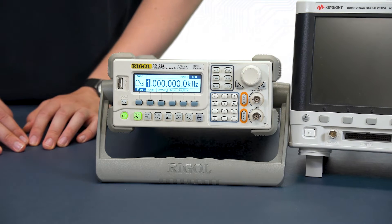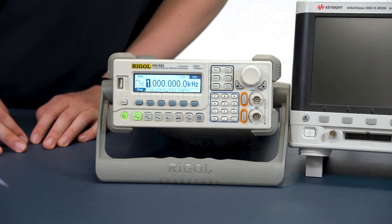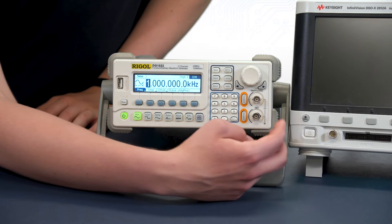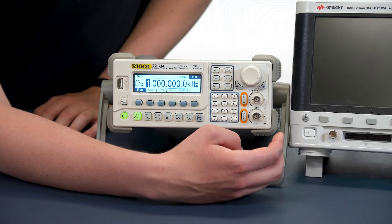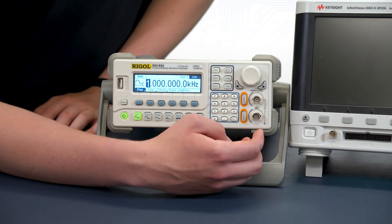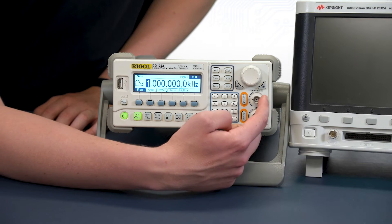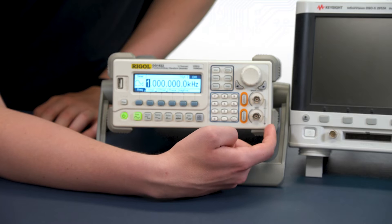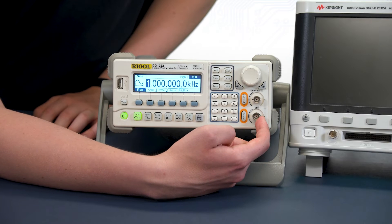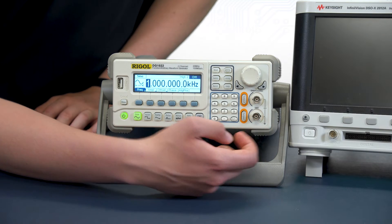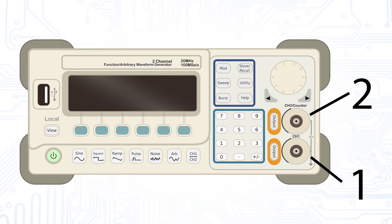Last but not least, we have the two outputs of the two channels. The upper output is channel two and the lower output is channel one. One of the most common mistakes when using the channels in a circuit is mixing up the two outputs, so mark that the numbering starts from the bottom up.